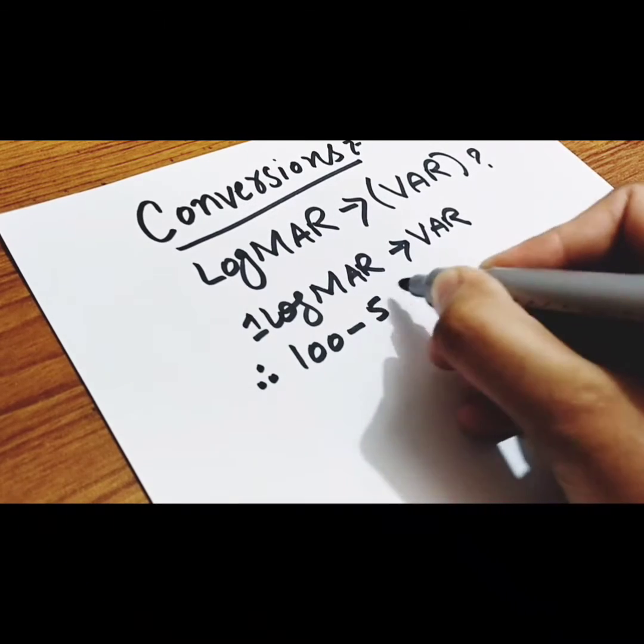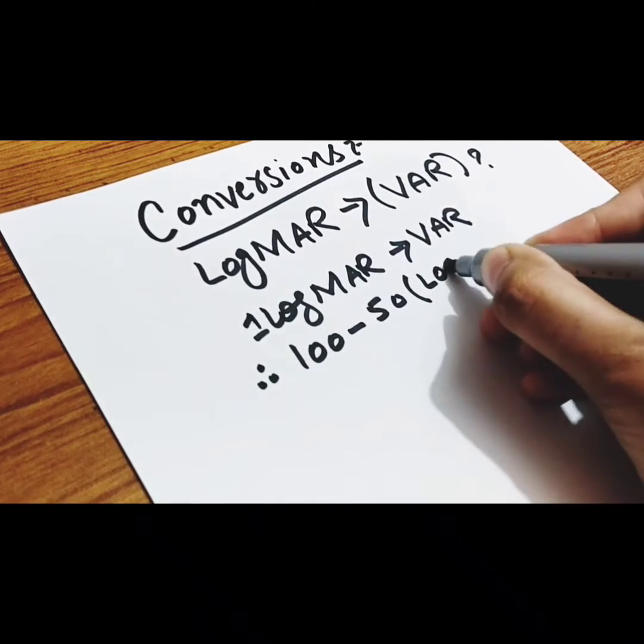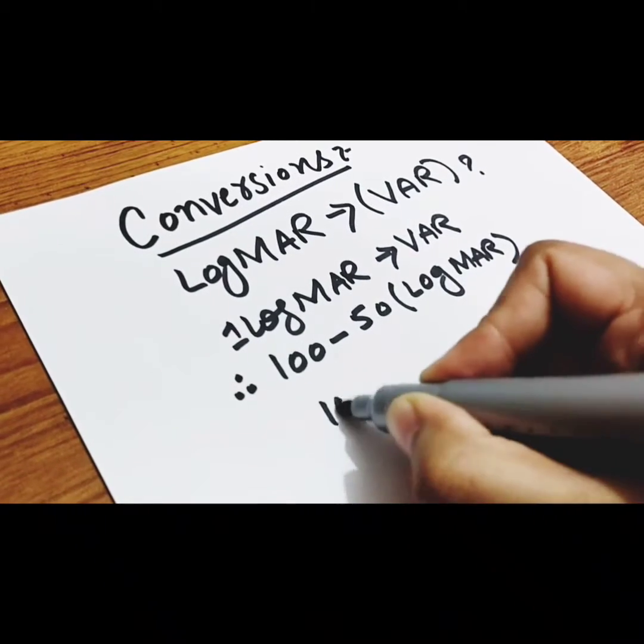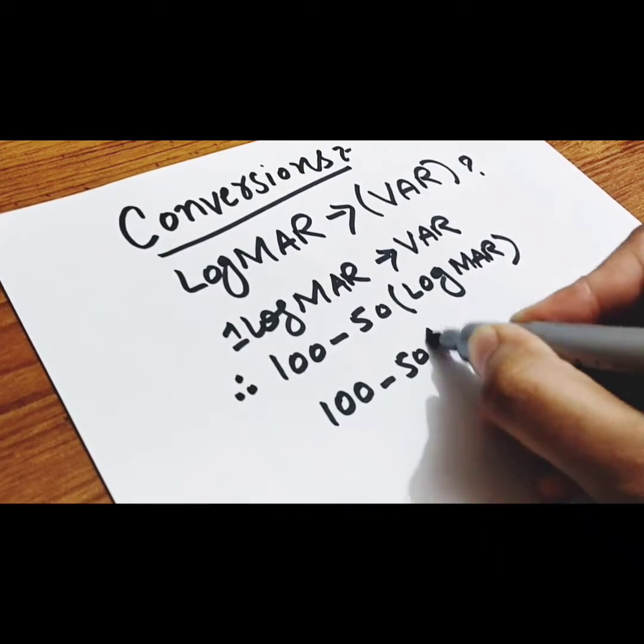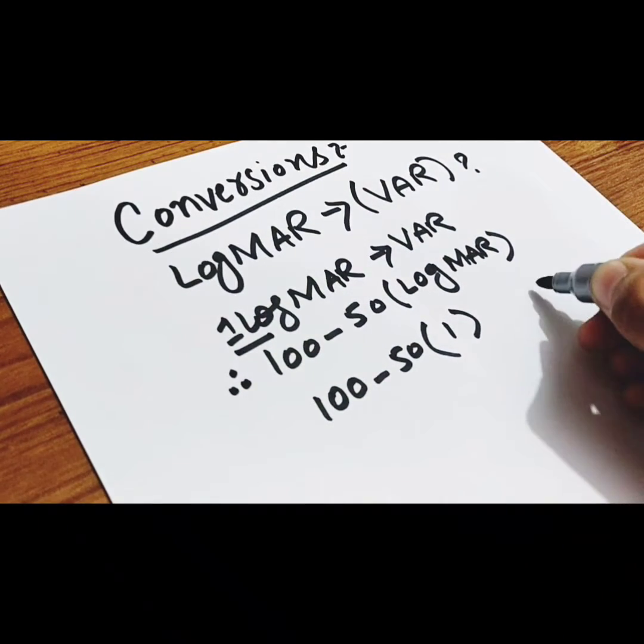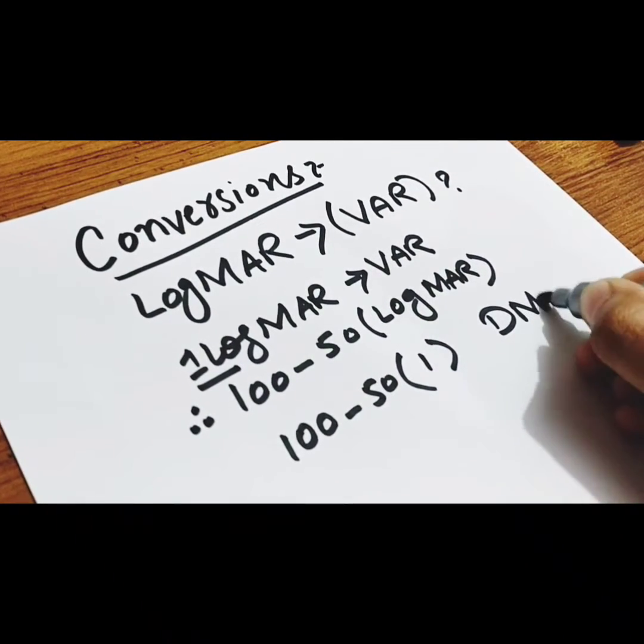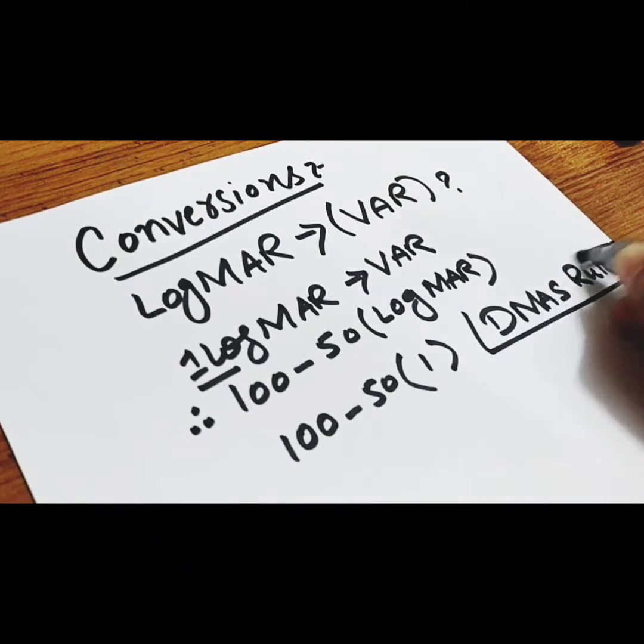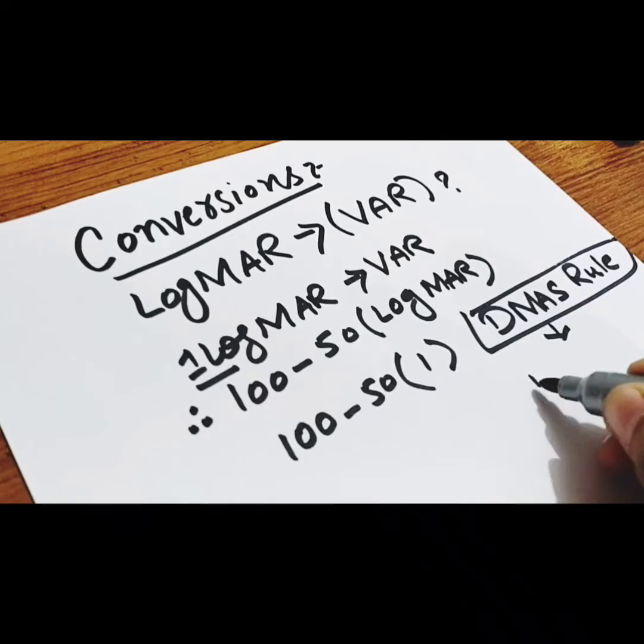Mathematical formula of this conversion is 100 minus 50 into logMAR, 100 minus 50 in bracket within bracket 1, and according to D mass rule, divide, multiply, add and subtract rule.